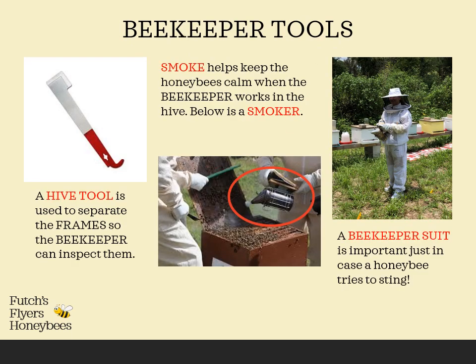Let's take a look at some of the beekeeper's tools. On the left is a hive tool — beekeepers use this to separate the frames and open up some of the hives. In the middle there's a smoker; smoke keeps the bees calm so we use that so we don't get stung. On the right side you'll see the beekeeper suit — this beekeeper is wearing a suit from head to toe with gloves, but that's usually a choice of the beekeeper. Most importantly is to protect yourself.